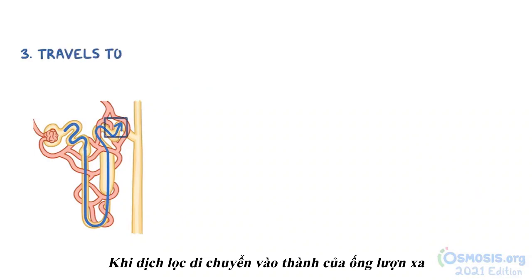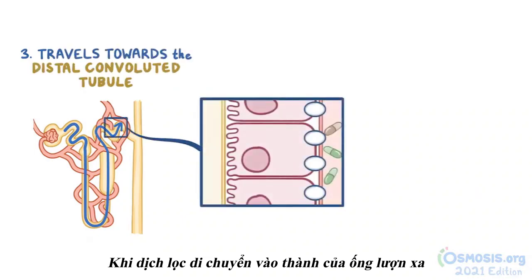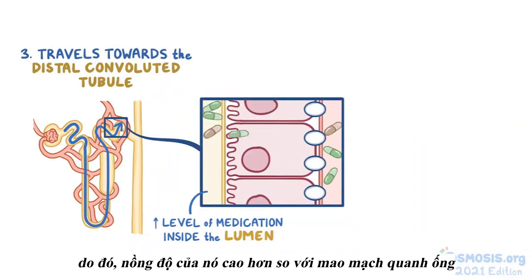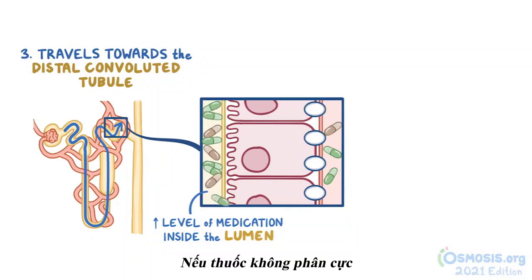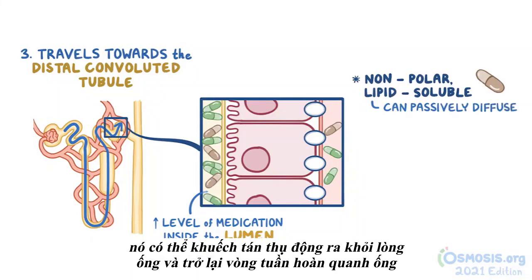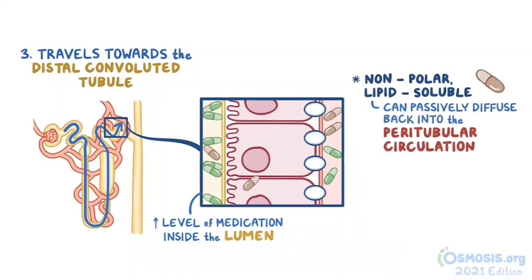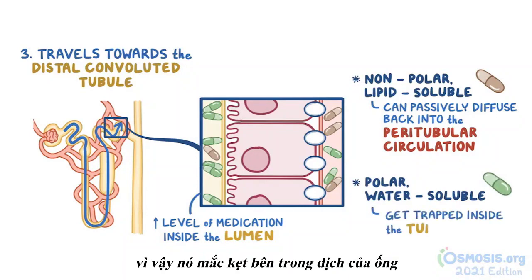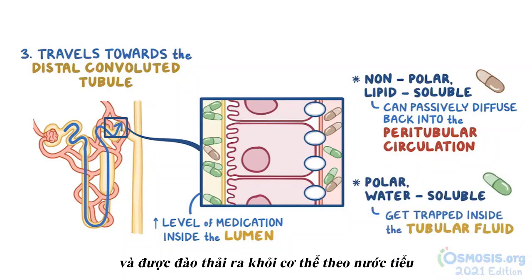As the filtrate travels toward the distal convoluted tubule, the level of medication builds up inside the lumen, so its concentration rises higher than in the paratubular capillaries. If the medication is nonpolar and lipid-soluble, it may passively diffuse out of the tubular lumen and back into the paratubular circulation. Polar and water-soluble medications, on the other hand, can't cross the membranes of tubular cells, so they get trapped inside the tubular fluid and are eliminated from the body with the urine.